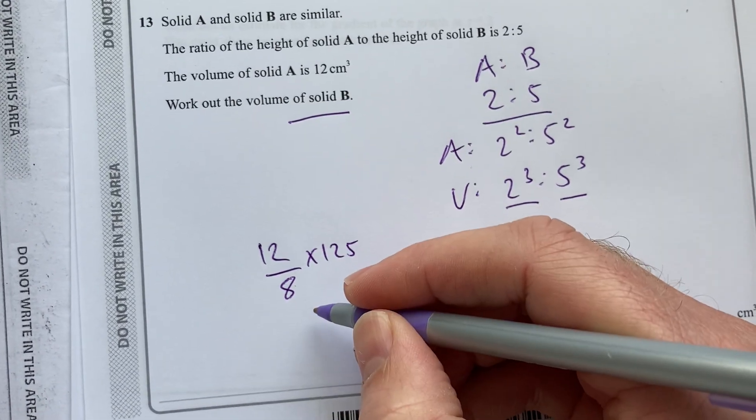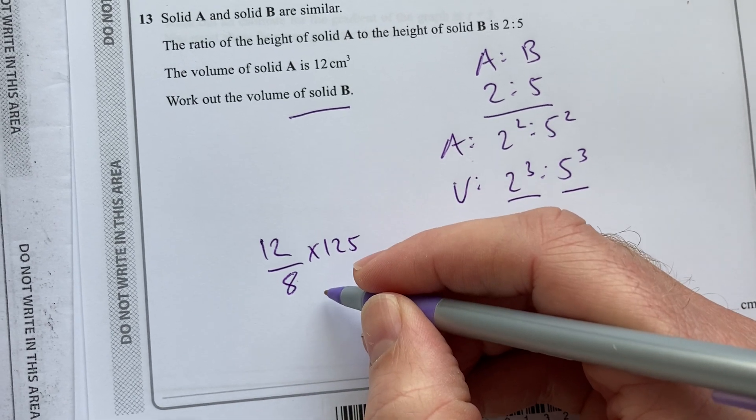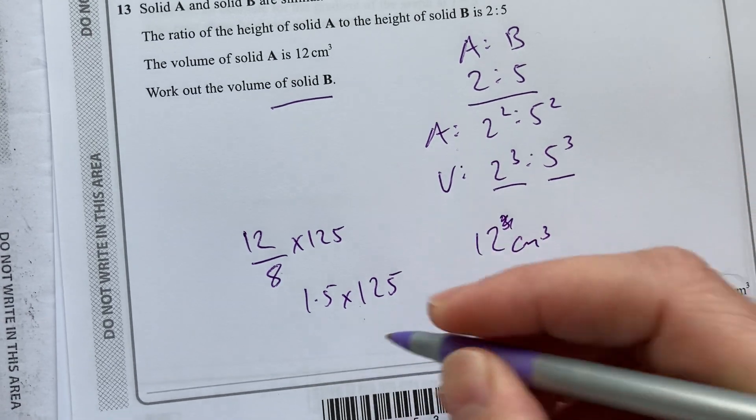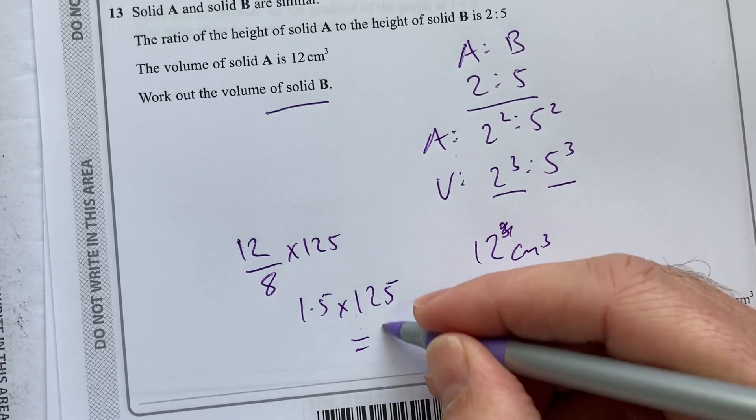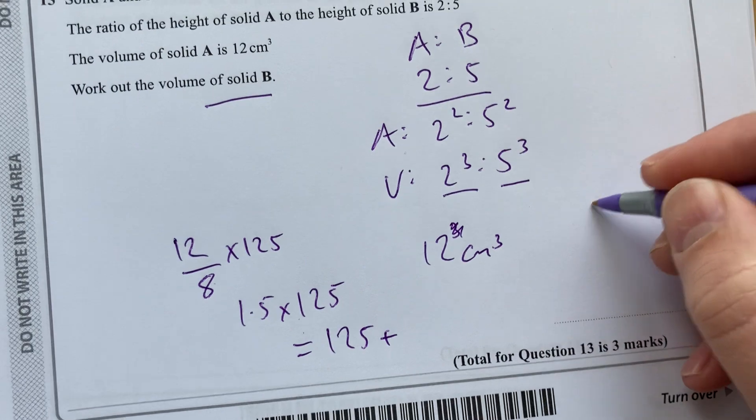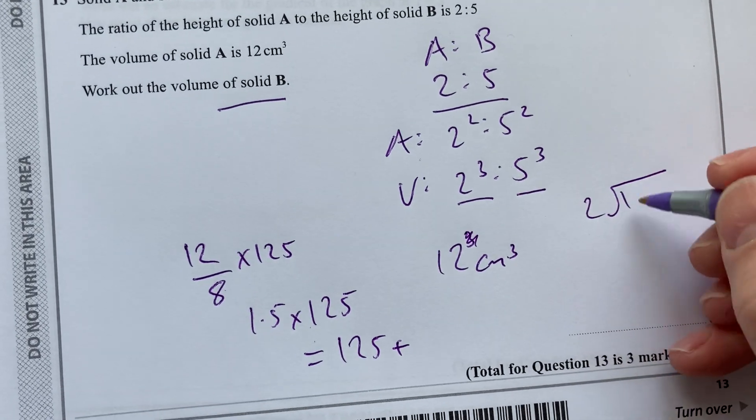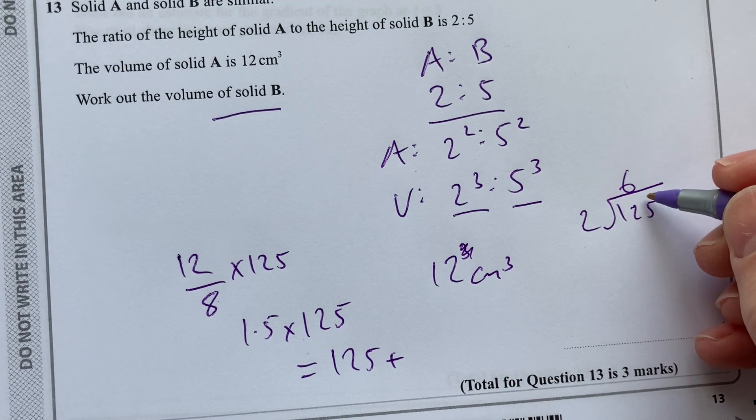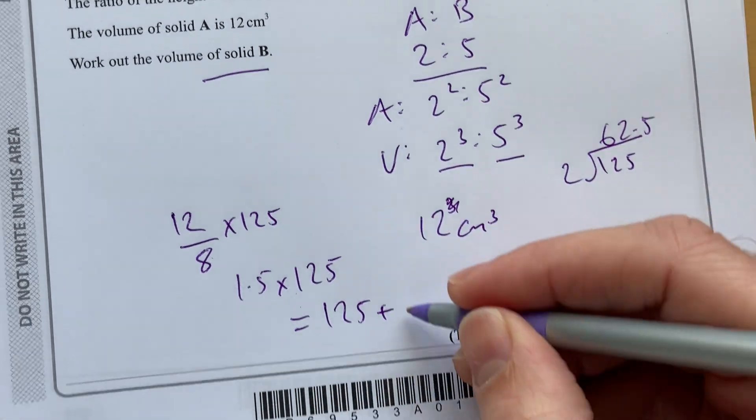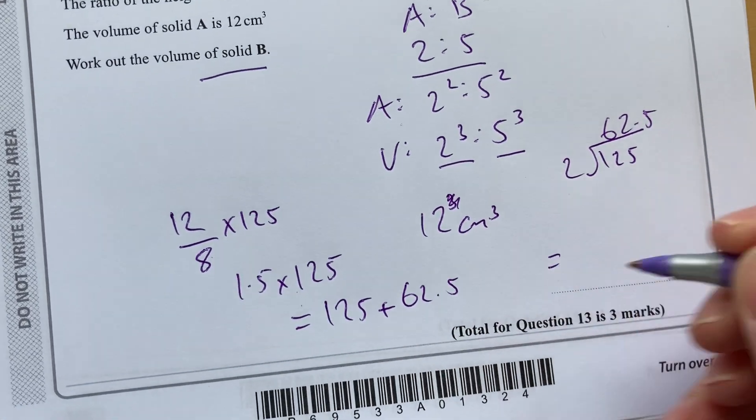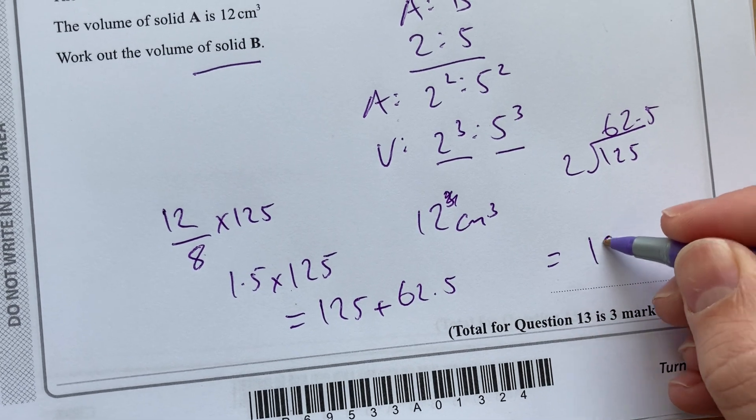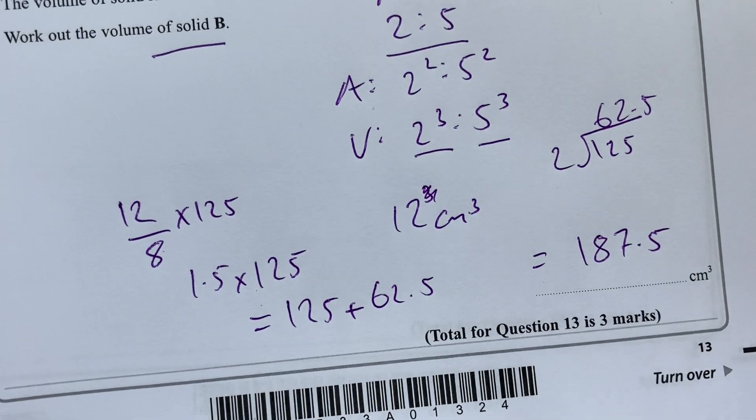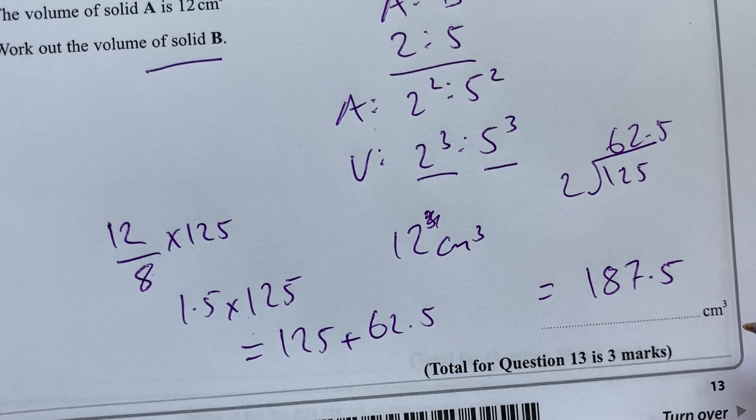So, 12 divided by 8 times 125. That's 1.5. So, we're going to do 1.5 times 125, which is going to be 125 plus 62.5 plus 62.5. So, we're going to get 187.5. And that unit there is cubic centimeters. That's three marks there.